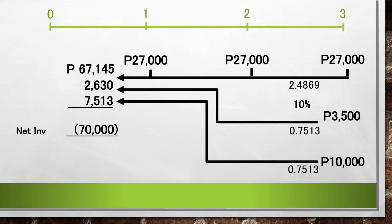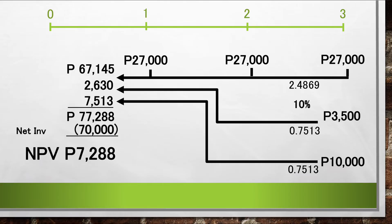After doing the relevant calculations, that gives a value of 77,288 — the present value of this project. Remember that the net investment was 70,000. So 77,288 minus 70,000 gives a net present value of 7,288. This is how we arrive at the net present value — we look at the cash flows expected from the beginning until the end, then apply the time value of money through the PV calculation.